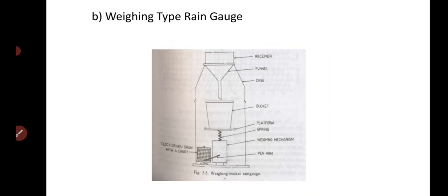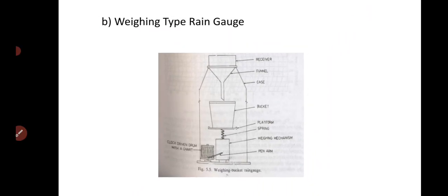The next type is the weighing type recording rain gauge. Remember the difference between the three types of rain gauges and their diagrams. This instrument is good to measure both rainfall and snowfall — unlike the tipping bucket type, which does not measure snowfall, the weighing type rain gauge measures both rainfall and snowfall.